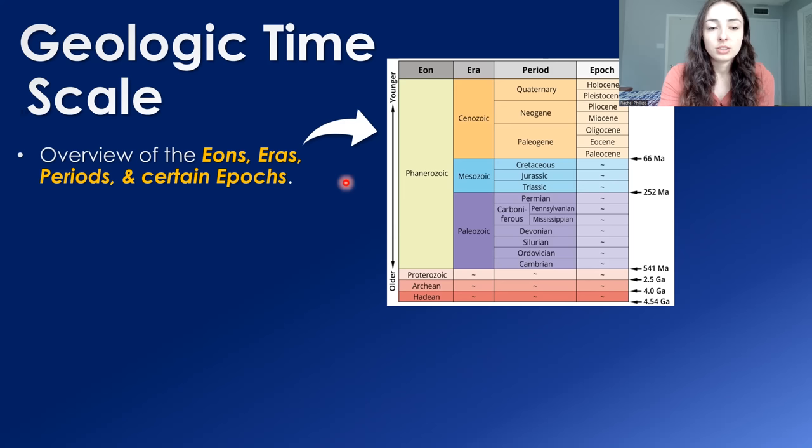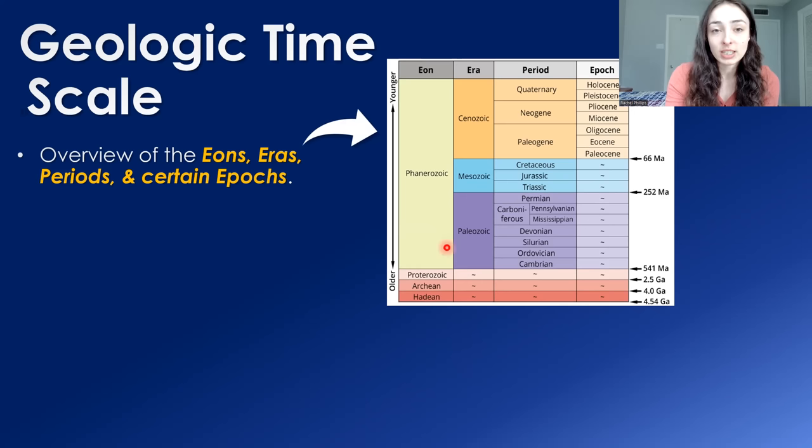As an overview of the major eons, eras, periods, and epochs of the geologic timescale, we have the Hadean, Archean, Proterozoic, and Phanerozoic eons. The Phanerozoic is spread out in this timescale figure because it is the current eon we are living in and has the most complete fossil record. It is broken down into the Paleozoic, Mesozoic, and Cenozoic eras, which span from about 540 million years ago to today.